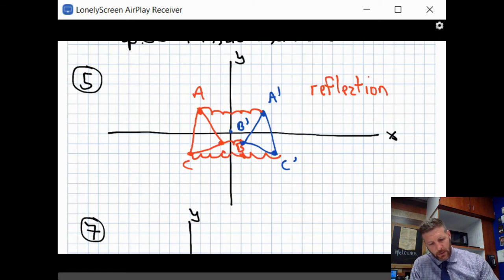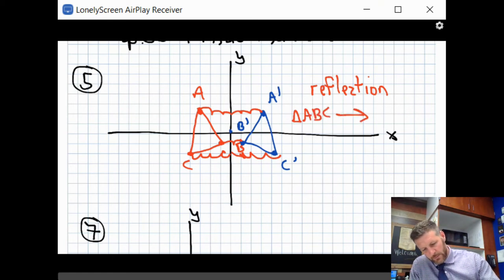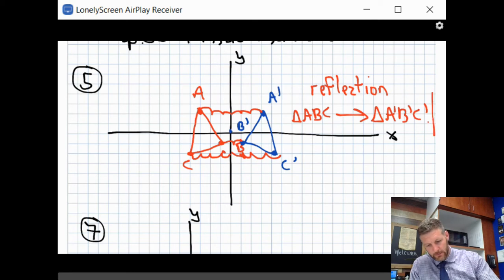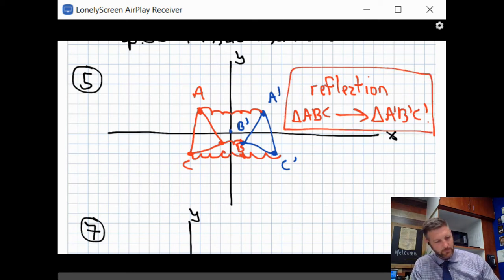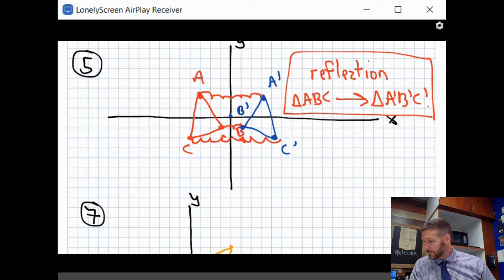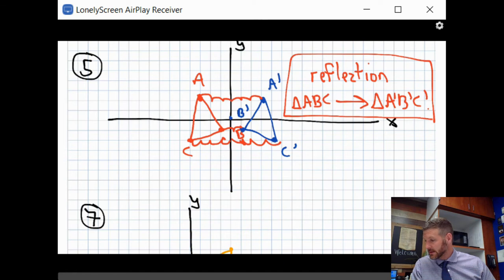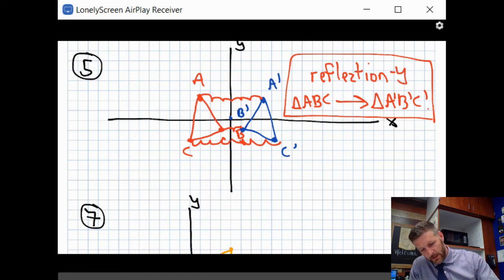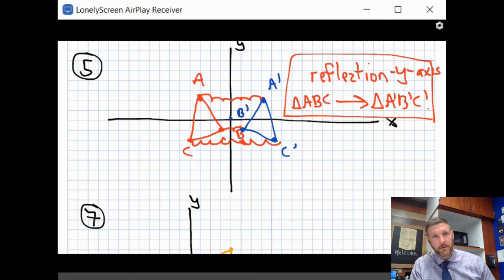What they want you to do is write out the notation, which would be something like triangle ABC was transformed into triangle A prime B prime C prime. Let's check it out. They also say in the book it was reflected across the Y axis. So you can note that here: reflection, Y axis.